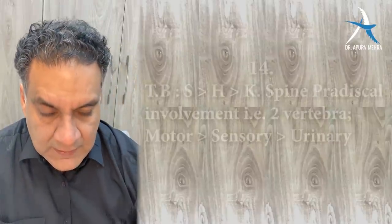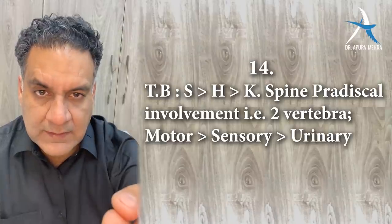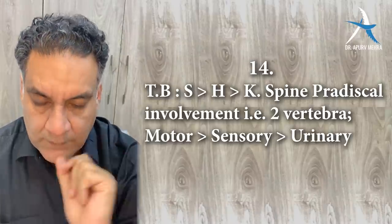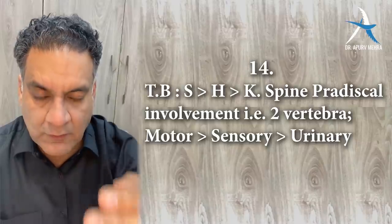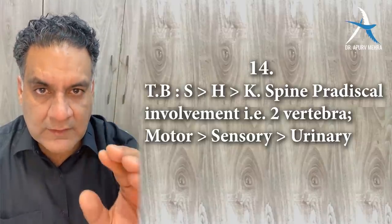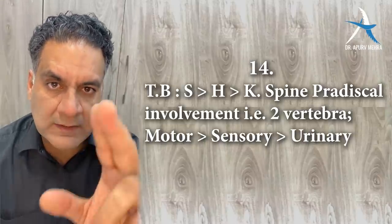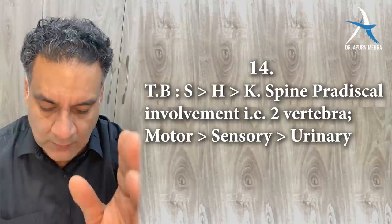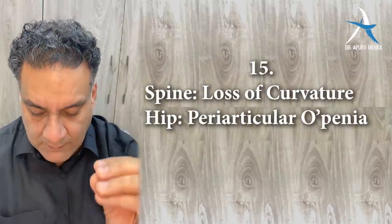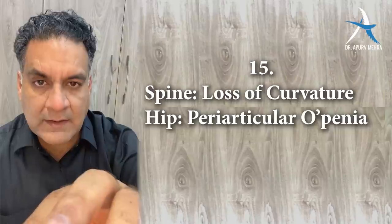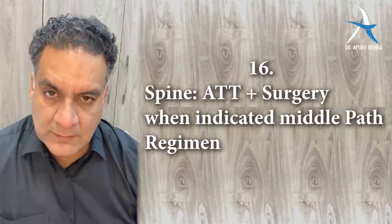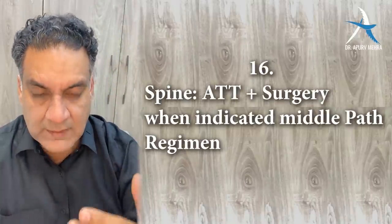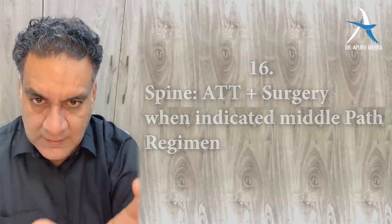Point number fourteen: tuberculosis involves the spine, hip, and knee in that order. In the spine, it involves two contiguous vertebrae — called paradiscal involvement. With spine compression, motor involvement comes first, then sensory, and finally bowel and bladder. TB of the spine causes loss of curvature, while TB of the hip causes osteopenia or osteoporosis due to greater blood supply. Treatment is anti-tubercular therapy and, when indicated, surgery — called the middle path regimen.